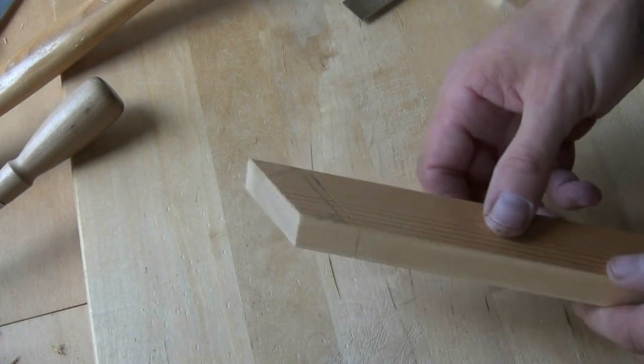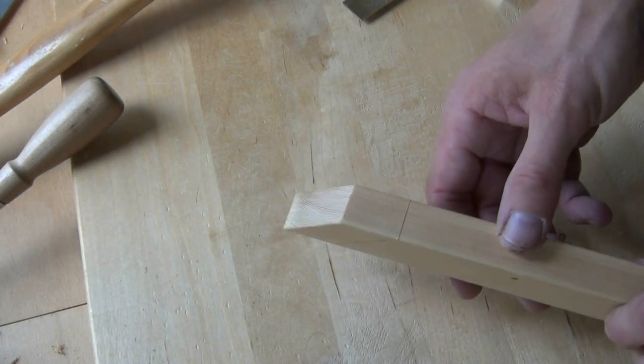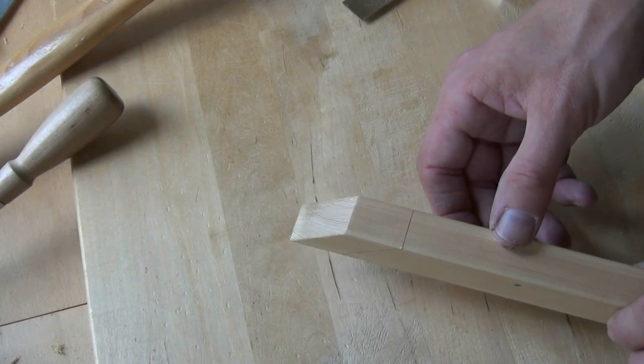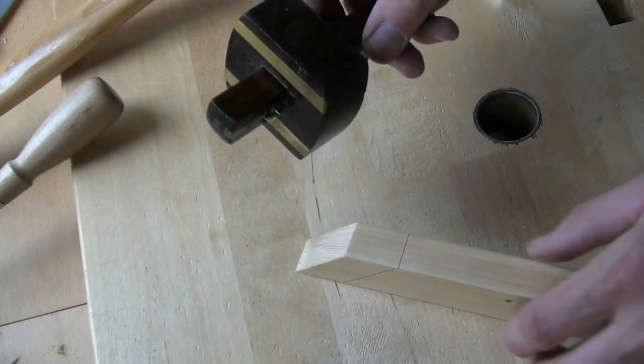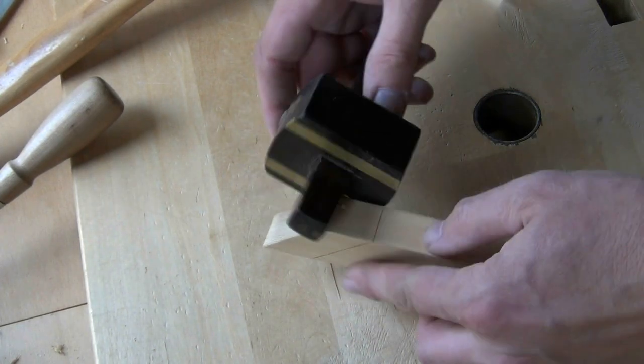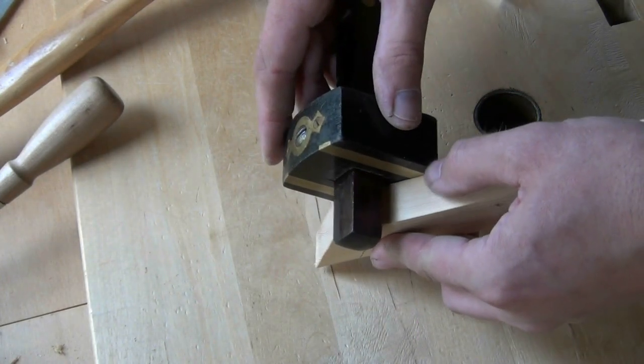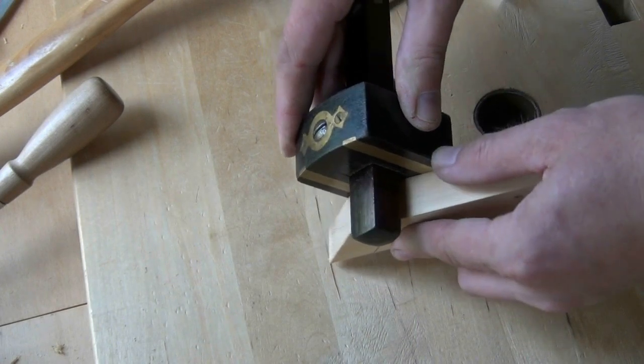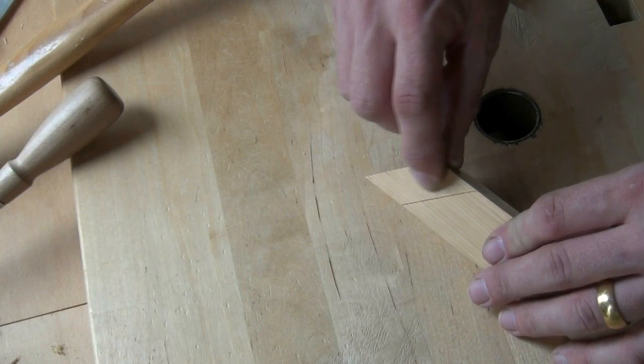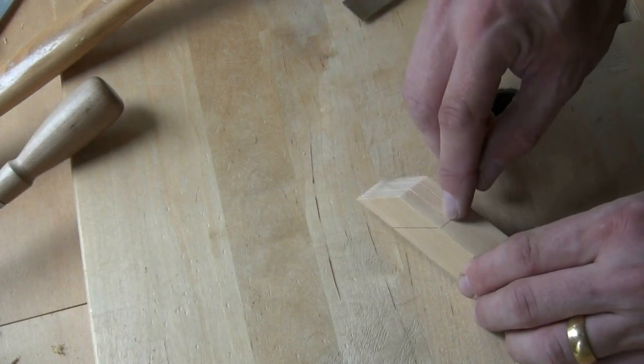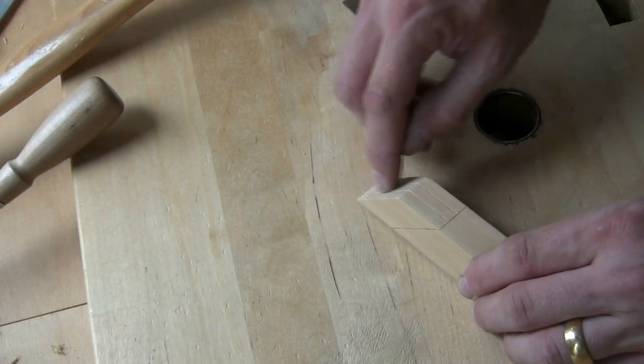With that knifed all around we can then mark out for the width of our tenon and I'll use the marking gauge again. Now we can cut the shoulders down to the cheek line and then saw down the cheek.